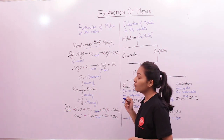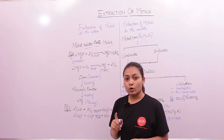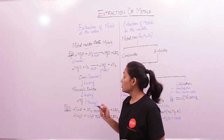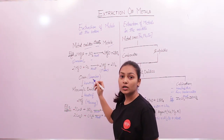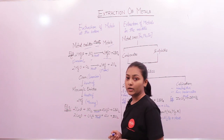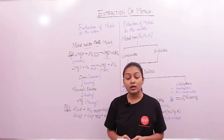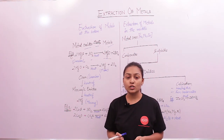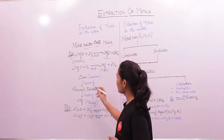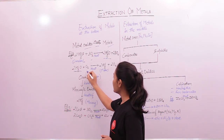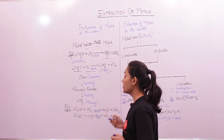Here I have taken the example of mercury. Cinnabar ore is an ore of mercury. If we heat Cinnabar in the presence of oxygen, mercuric oxide is obtained. Now if we heat this mercuric oxide again in the presence of oxygen, we can obtain mercury.